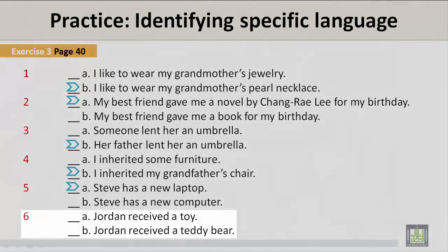Number 6. A: Jordan received a toy. B: Jordan received a teddy bear. The correct answer for identifying specific language is B: Jordan received a teddy bear.